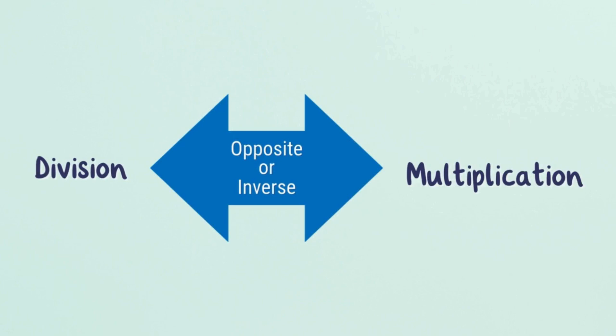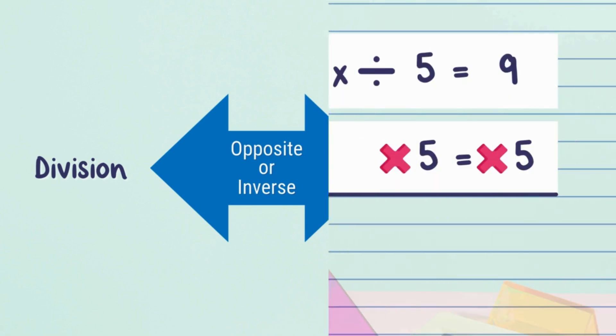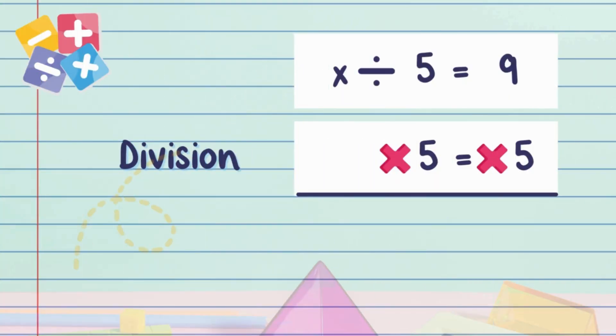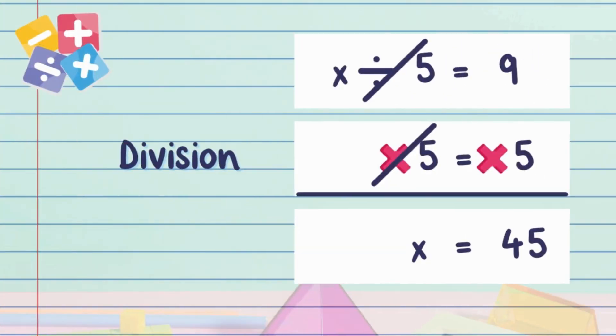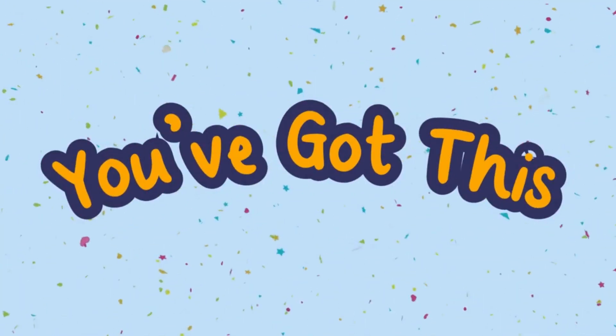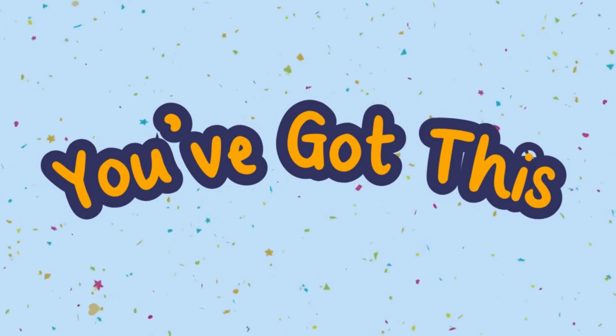So what's the opposite of dividing by 5? Yep, you guessed it—multiplying by 5. That gives us x = 45. You've cracked another one-step equation like a pro!